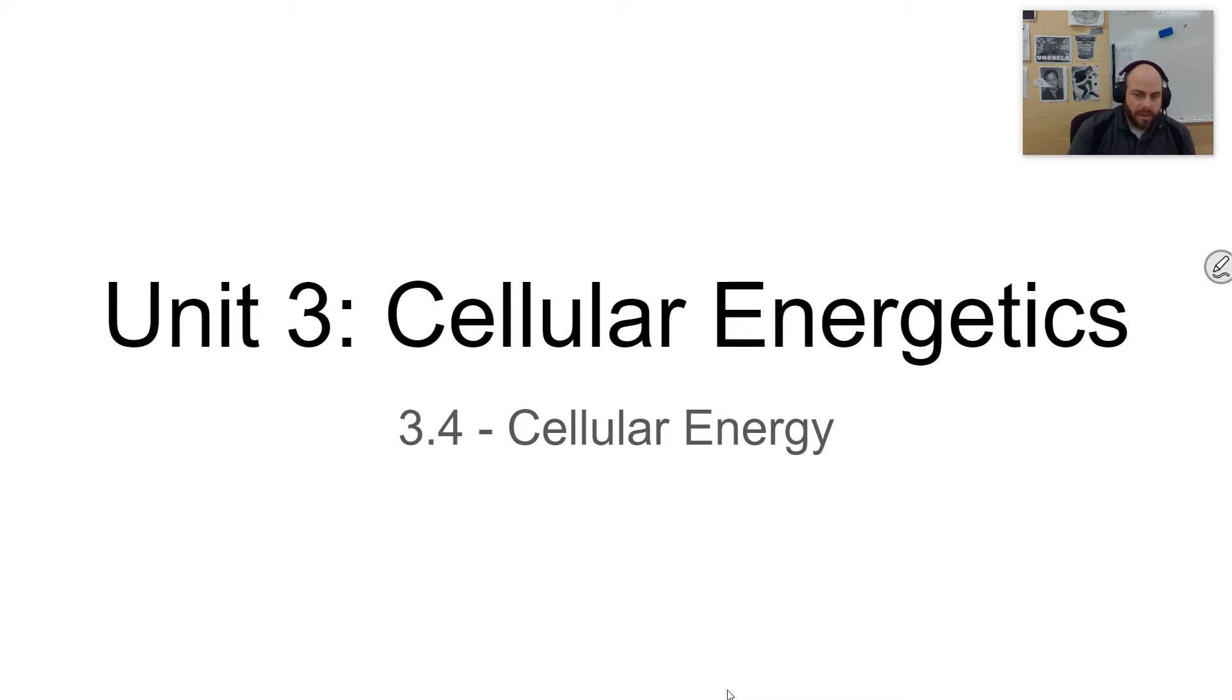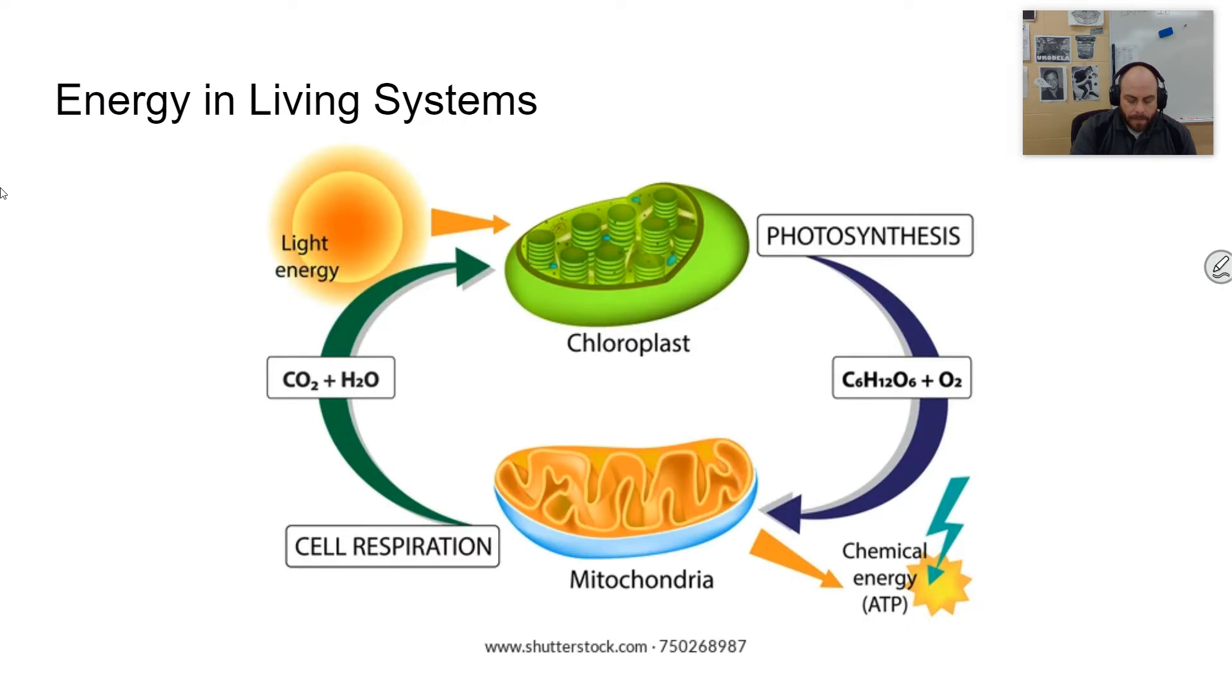Before we do that, we have to get kind of a primer on energy itself. All living systems require a constant input of energy that cannot function without this input of energy, and sunlight is the primary energy input for all living systems. You can see here in this picture you have light energy being input into a chloroplast. The chloroplast is where photosynthesis takes place, and so that's where that energy is able to be synthesized into a chemical form and then in the mitochondria, that chemical form of energy is then broken down and transferred into ATP, which is kind of the cell's energy currency.